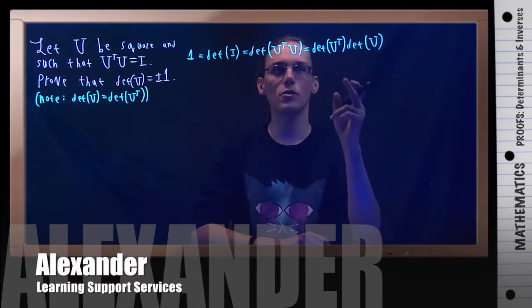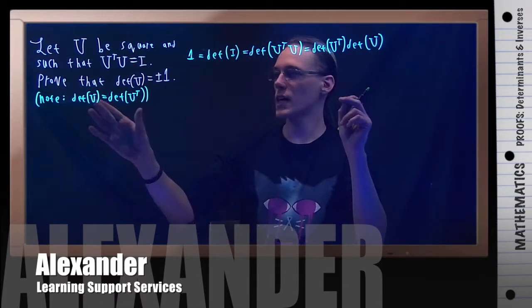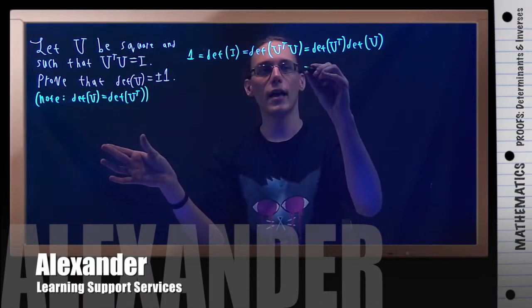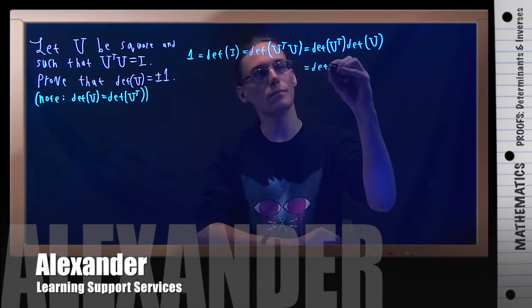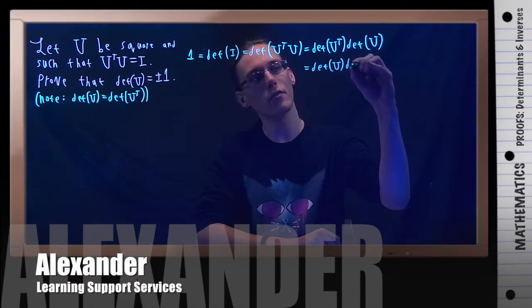What's the determinant of U transpose? It's the same thing as the determinant of U. So this is the determinant of U times the determinant of U.